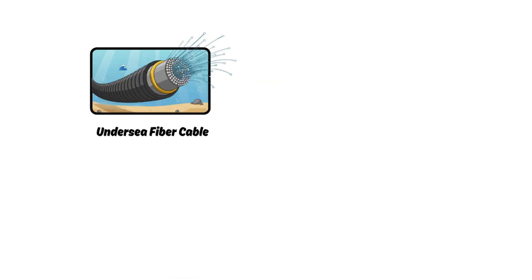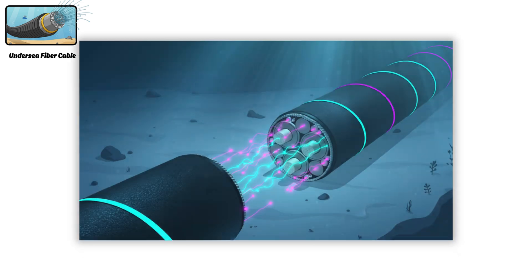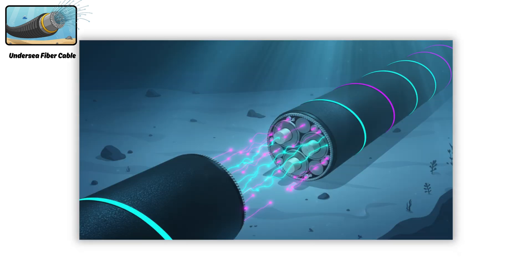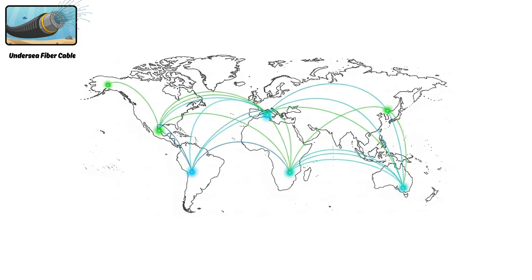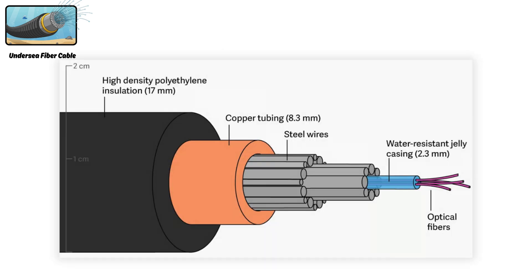Undersea internet cables are long fiber-optic cables laid on the ocean floor. They carry internet data as tiny flashes of light between countries. These cables connect continents and handle almost all international internet traffic. Inside the cable, there are very thin glass fibers that send the light, and around them are many protective layers to stop water, pressure, and damage.